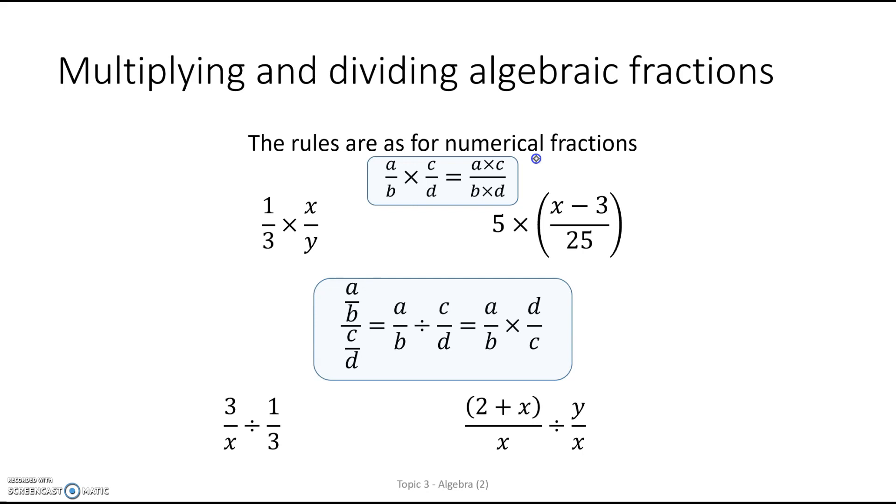We know already how to add and subtract or multiply and divide fractions. But let's have a look here at multiplying and dividing first up. So for the first example, we know the rule because it's the same rule as for arithmetic. So we multiply top times top, which is x over 3y. And there's nothing we can do.